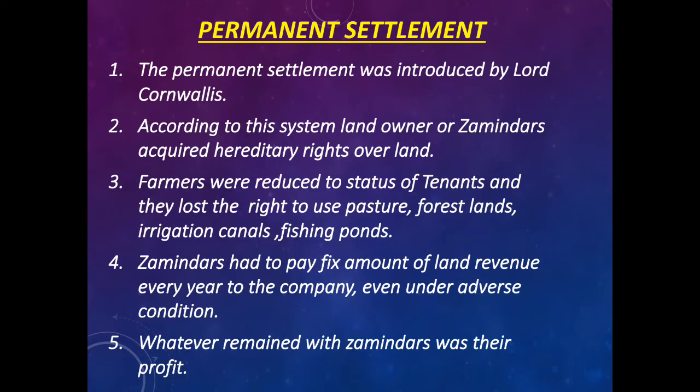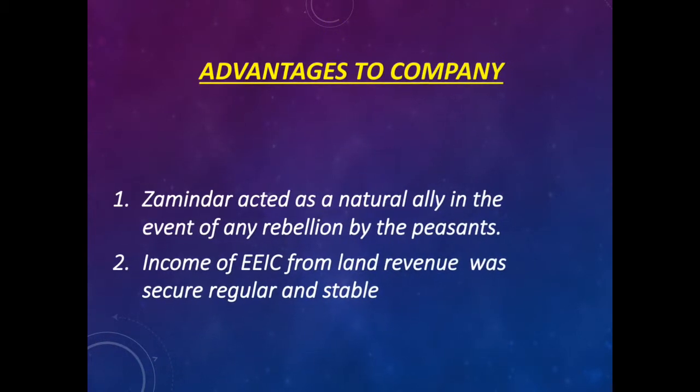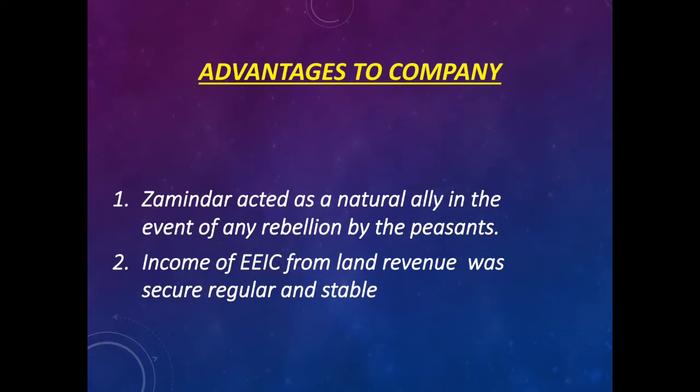Zamindars had to pay a fixed amount of land revenue every year to the company, even under adverse conditions. Whatever remained with the zamindars was their profit. Advantages to the Company: the zamindar acted as a natural ally in the event of any rebellion by the peasants, and income of the EEIC from land revenue was secure, regular, and stable.